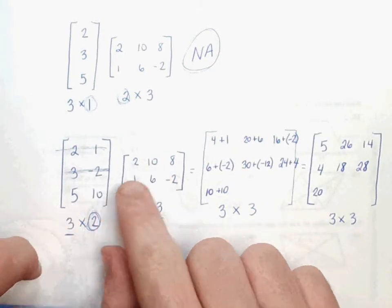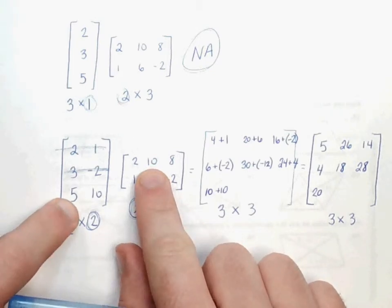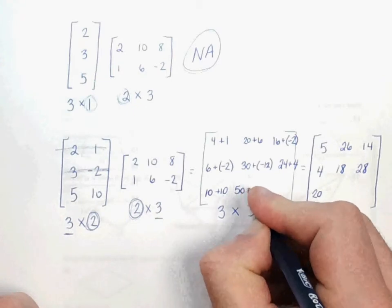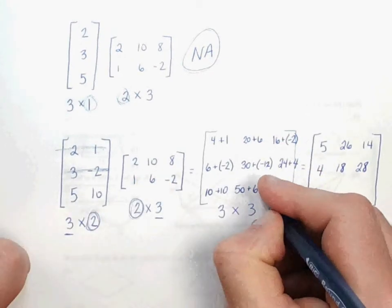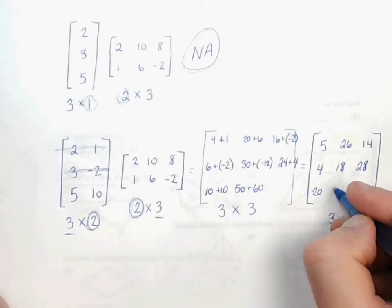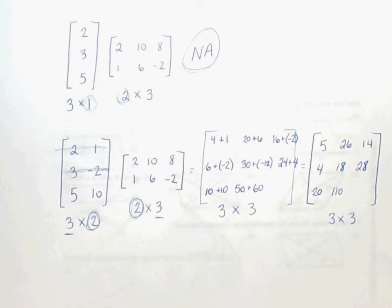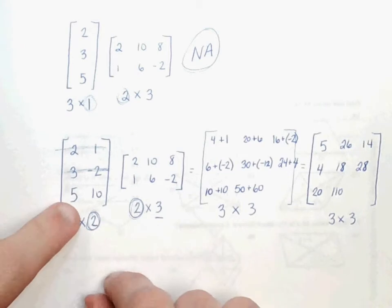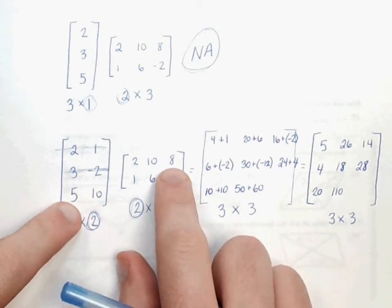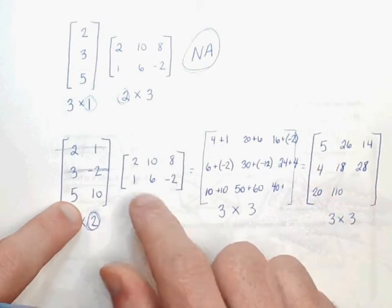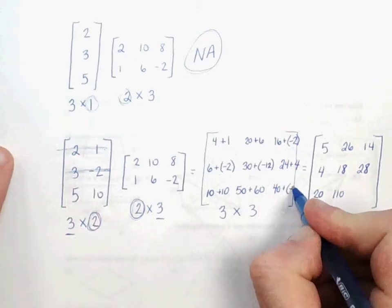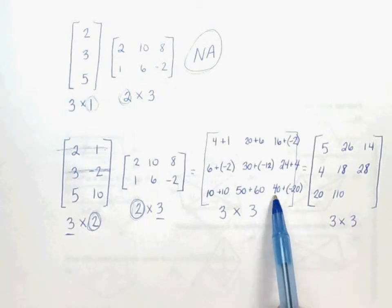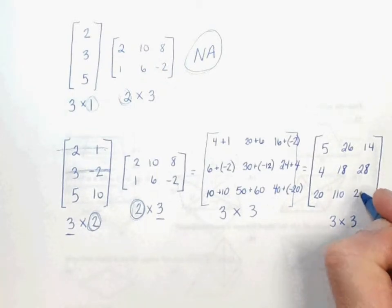So we use the first column. Now let's use the second column. 5 times 10 would be 50. Slide over and down. 10 times 6 is 60. So 50 plus 60, that would give us 110. So we've got one final answer to put in our answer matrix. We're going to use our row here and the last column. 5 times 8 would give us 40. Slide over and down. 10 times negative 2 would give us negative 20. So 40 plus negative 20 or 40 minus 20 would leave us with 20.